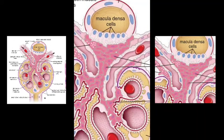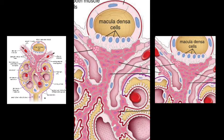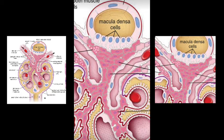The second component is the macula densa. In the distal convoluted tubule, at the site of contact with the afferent and efferent arteriole, the cells lining the epithelium are slightly modified — they are densely packed together and somewhat columnar. While the rest of the DCT epithelium is cuboidal, here the cells are columnar and densely packed, forming the macula densa. They lie in close contact with the juxtaglomerular cells and extraglomerular mesangial cells.